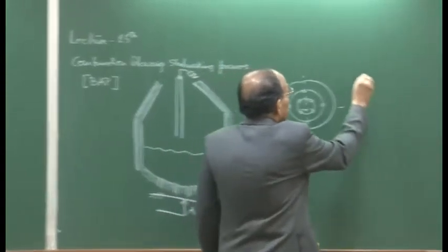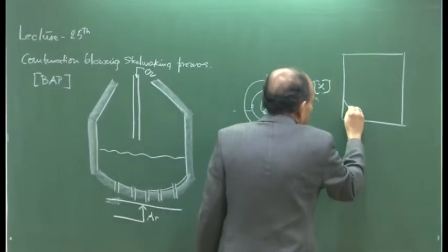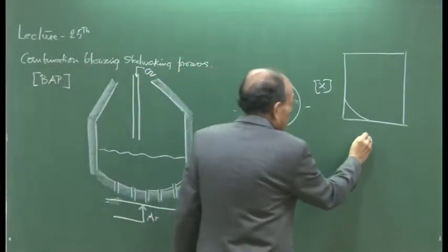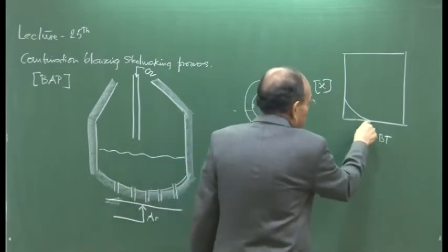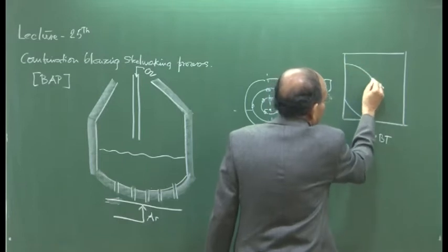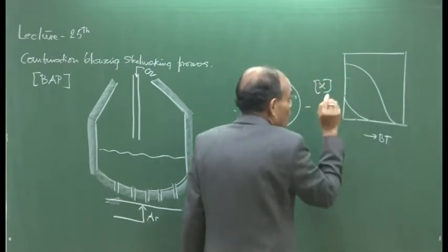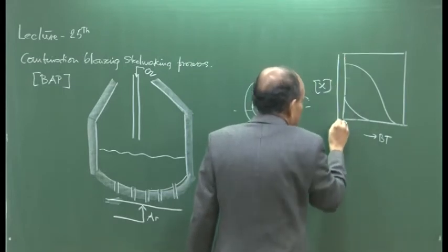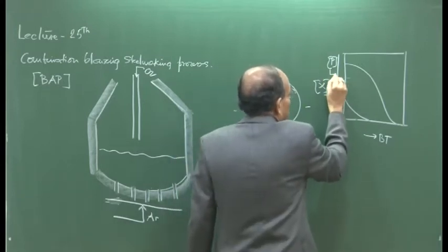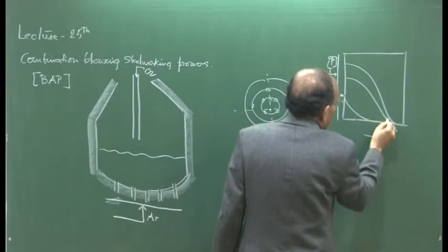For example, I have drawn this elemental removal plot — you should be able to visualize this. The x-axis is blowing time: 5, 10, 15, 20 minutes. Then carbon, silicon, manganese, and phosphorus are plotted. Carbon starts high and goes down; phosphorus also decreases and is plotted on a different scale because phosphorus is only about 0.1% while carbon is 0.15%. So there is a different scale for phosphorus and another scale for the other elements, and phosphorus also shows simultaneous removal.